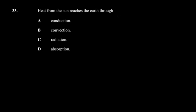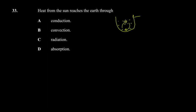In convection, imagine a vessel with fluid. The part of the liquid at the bottom gets heated and becomes less dense, so it rises. The cooler, denser fluid sinks to the bottom, creating a cyclic motion. This cyclic nature is called convection.